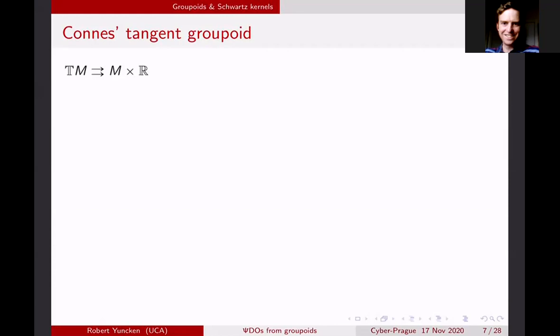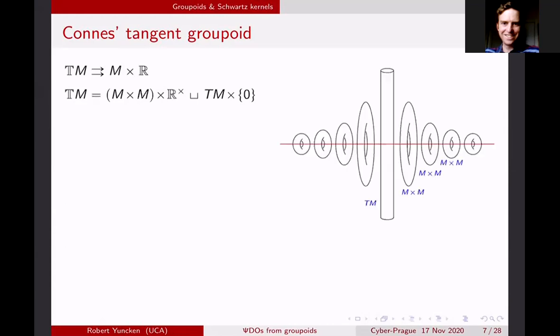This is a groupoid with base space M × ℝ — the set of objects is M × ℝ. It decomposes as a disjoint union — a family of groupoids indexed by this parameter ℝ; the parameter will always be called t. This tangent groupoid decomposes as a family of groupoids indexed by t. For all non-zero t, for t in ℝ×, it's just M × M, the pair groupoid. And the one exception is that the fiber at t = 0 is going to be the tangent bundle TM.